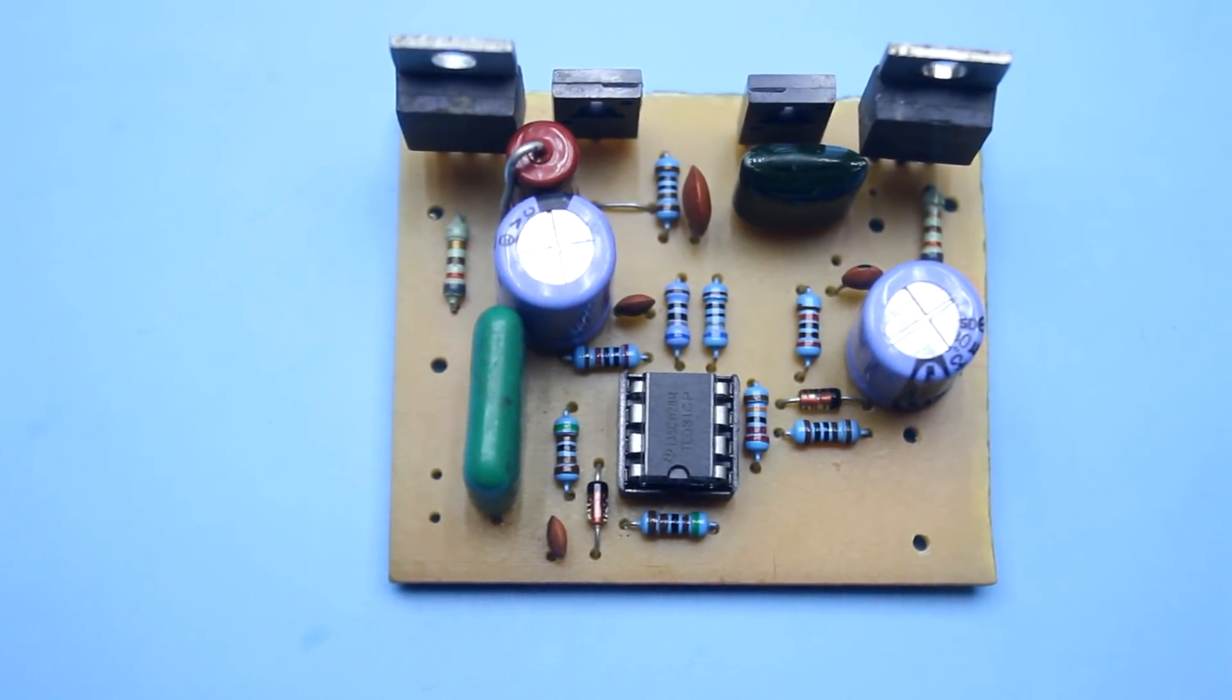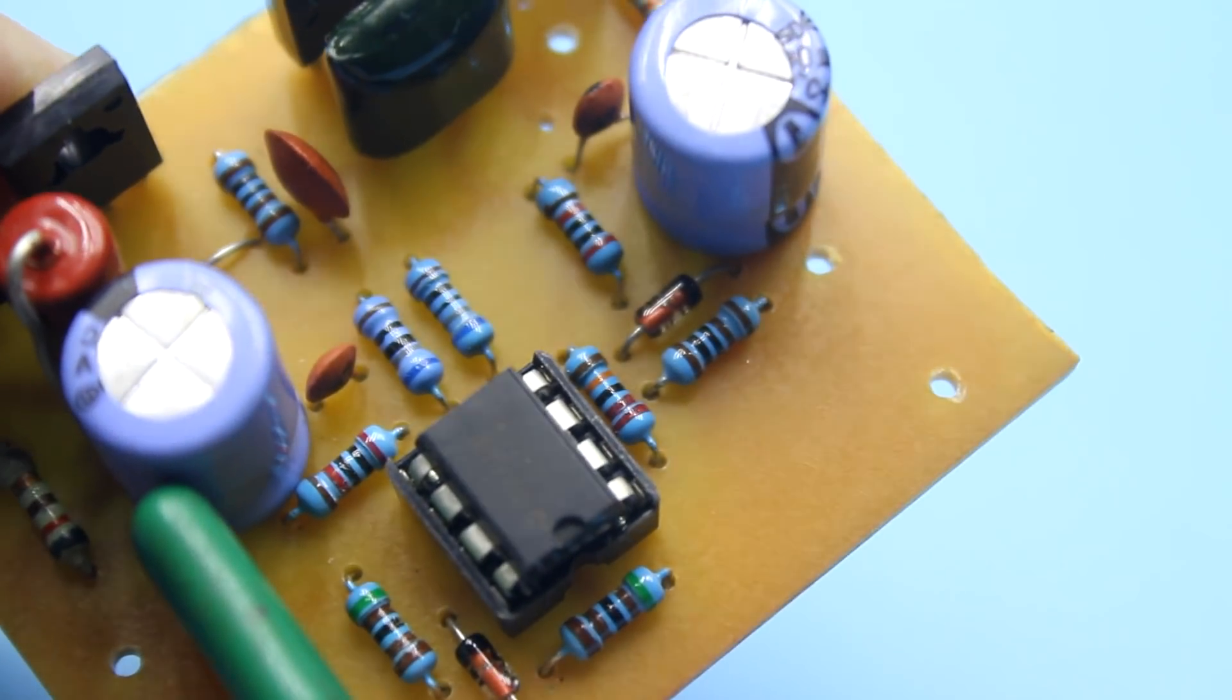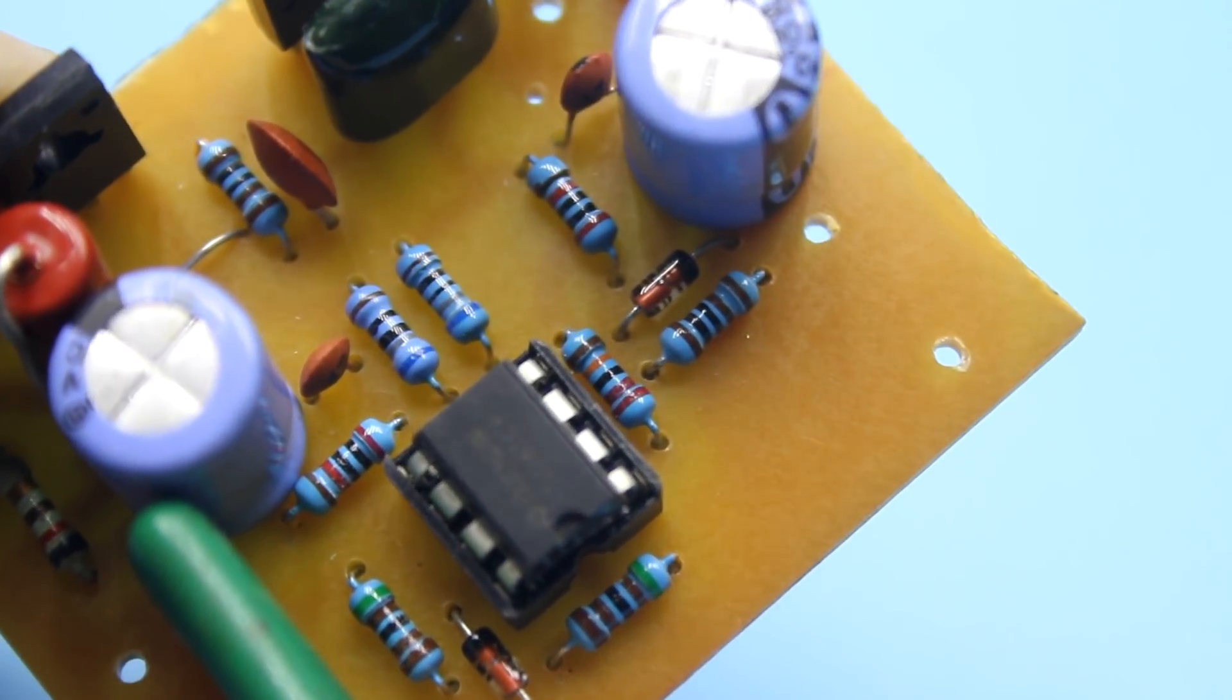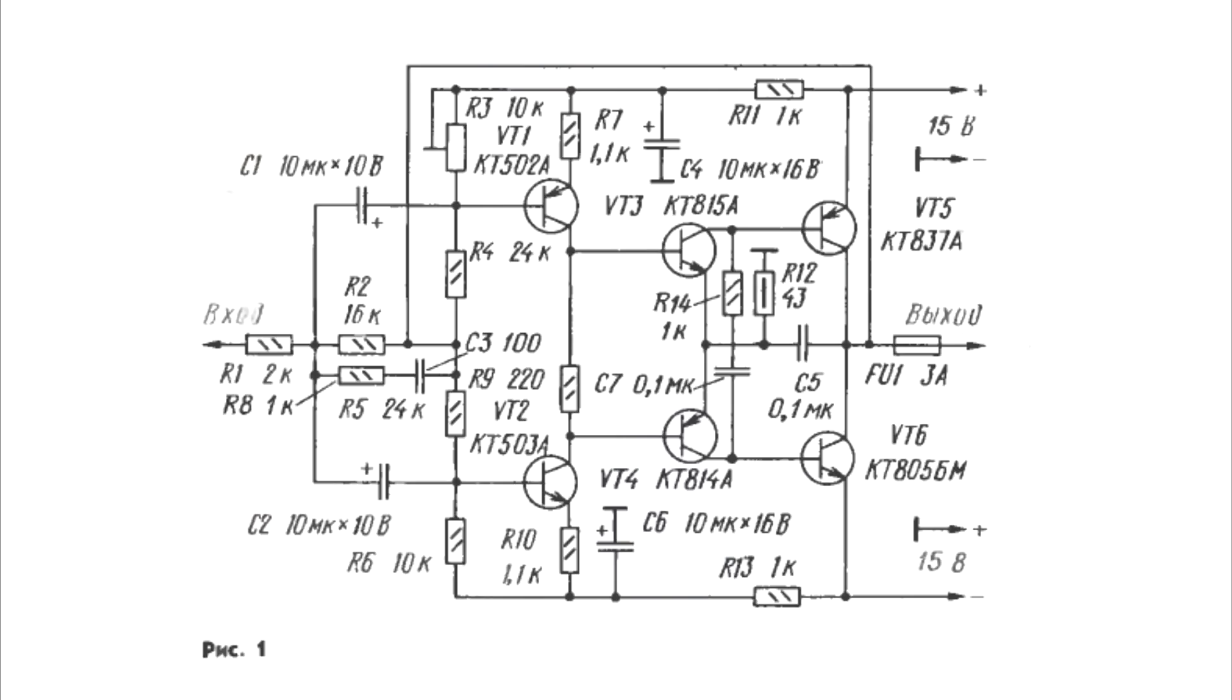I advise you to install the chip of the amplifier on the mounting panel for quick replacement in case something bad happens. By the way, this author also has a second version of this amplifier, completely on transistors. It is now in front of you.